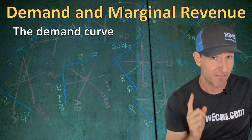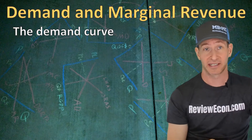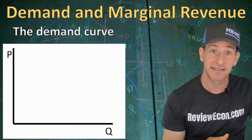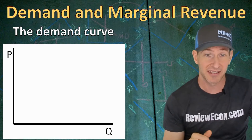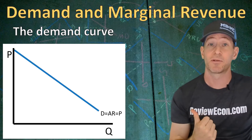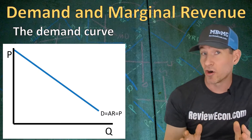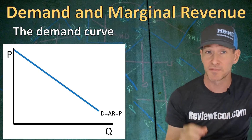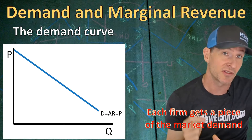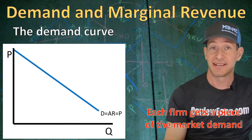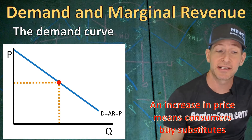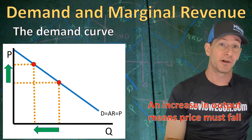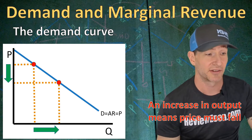Next, we are going to talk about the demand and marginal revenue for a monopolistically competitive firm. When we draw out the graph, we have price on the y-axis and quantity on the x-axis. Each firm has a downward sloping demand curve — and this isn't the overall market demand curve like you see with a monopoly. This is the firm's portion of the market, essentially the customers available to them. Since it's downward sloping, an increase in price means consumers will buy substitutes, and an increase in output will mean price will necessarily fall.